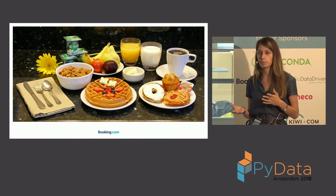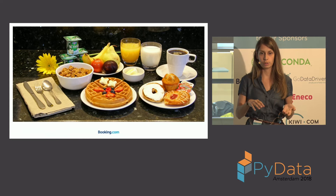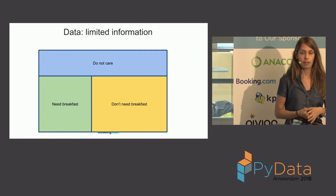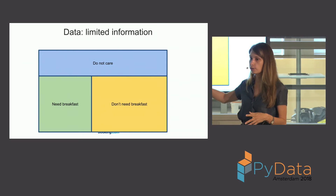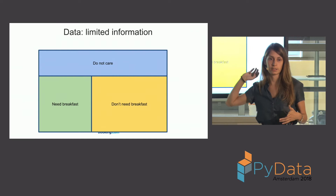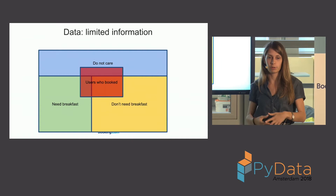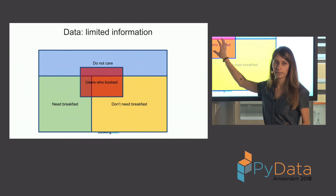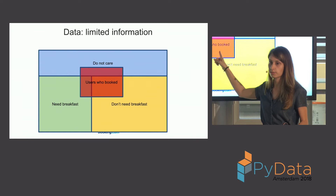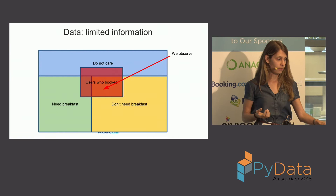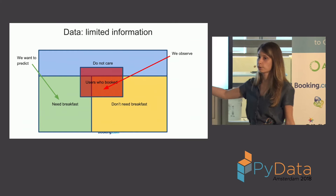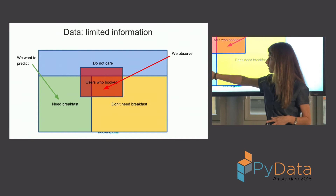Let me give a simple example. Imagine you want to predict whether a user would like to have breakfast — just a binary classifier. You'd assume users divide into three categories: those who want breakfast, those who don't, and a small part that doesn't care. However, we don't know the user's intent because there's nowhere on the website where we ask about it. The only thing we have is users who made a booking, and from that we see who bought a room with breakfast and who didn't.